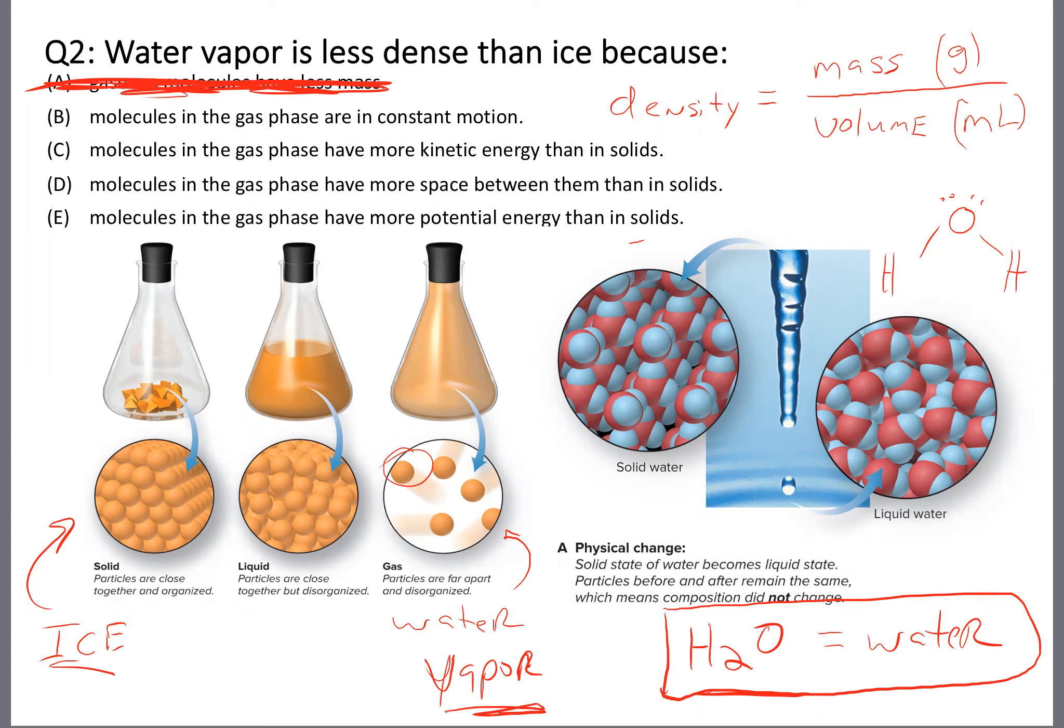What about choice B? Molecules in the gas phase are in constant motion. I said that, that's true. So this answer might look promising, but does that really explain the density difference? No, not really. Because for there to be a difference in density, there has to be a difference in mass per unit volume. I understand that gases have these particles which are in constant random motion until they collide with something, but that really does not explain the density difference at all, does it? So that's not our answer.